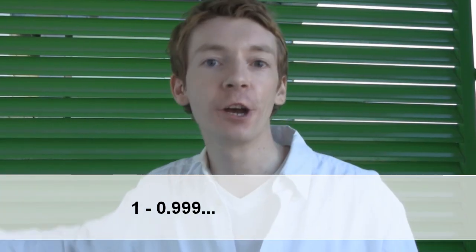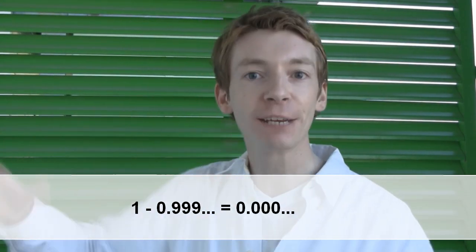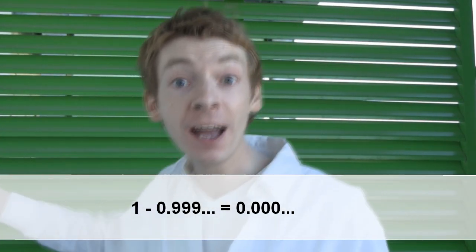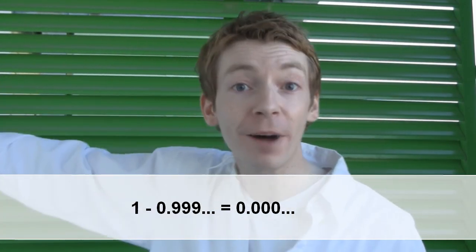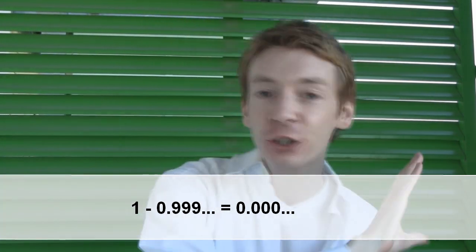Look at the difference. So let's take 1 minus 0.999 recurring. Then you could think of it as a string of zeros: 0.0000 going on forever. And it does go on forever. There is no number at the end of that. There is no pot of gold at the end of that rainbow. It just goes on forever, 0.0000.